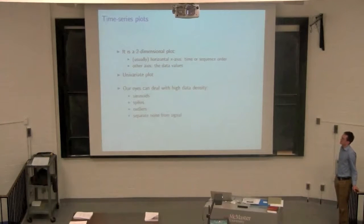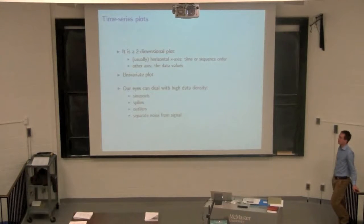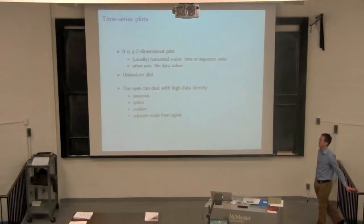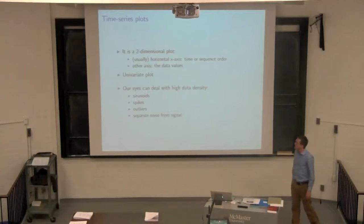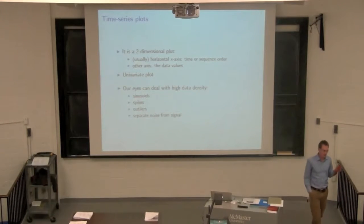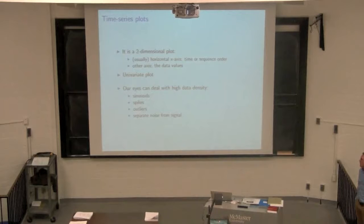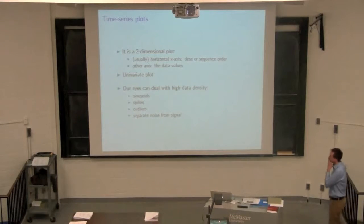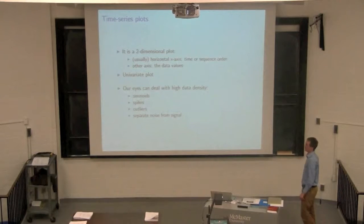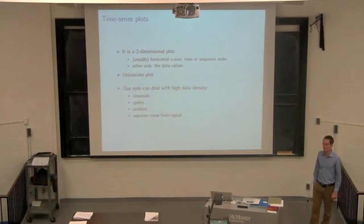Let's take a look at time series plots. A time series plot is a 2D plot, but it's only showing one thing — it's one variable. We say it's univariate. If it's a 2D plot, you're plotting time, usually on the x-axis — the horizontal axis. It may not be time; it might just be a sequence: one, two, three, four, five. And on the y-axis, we're plotting the value of that univariate variable.